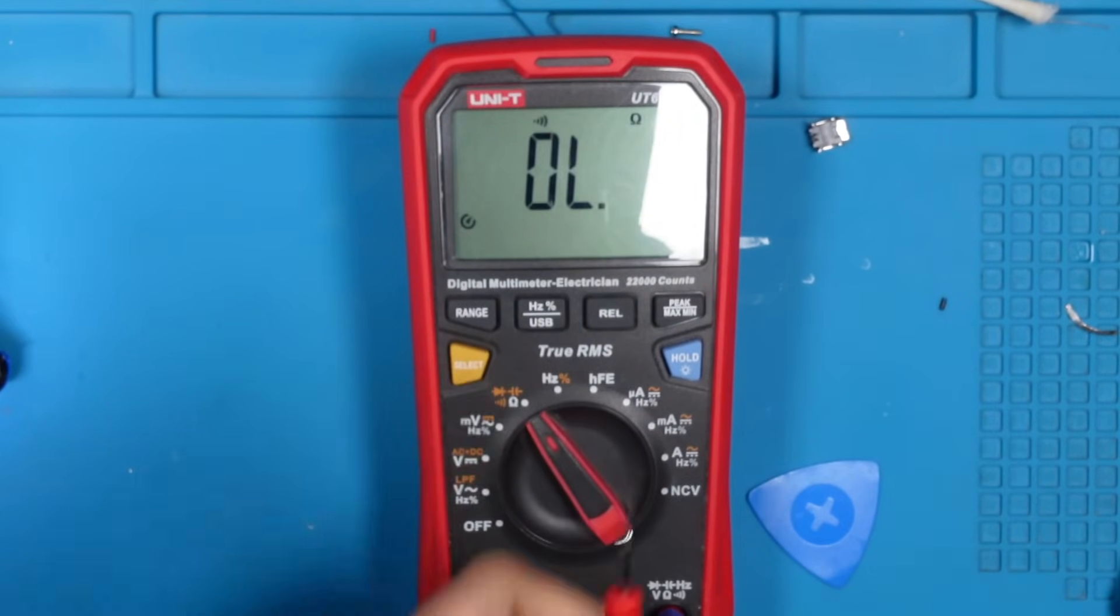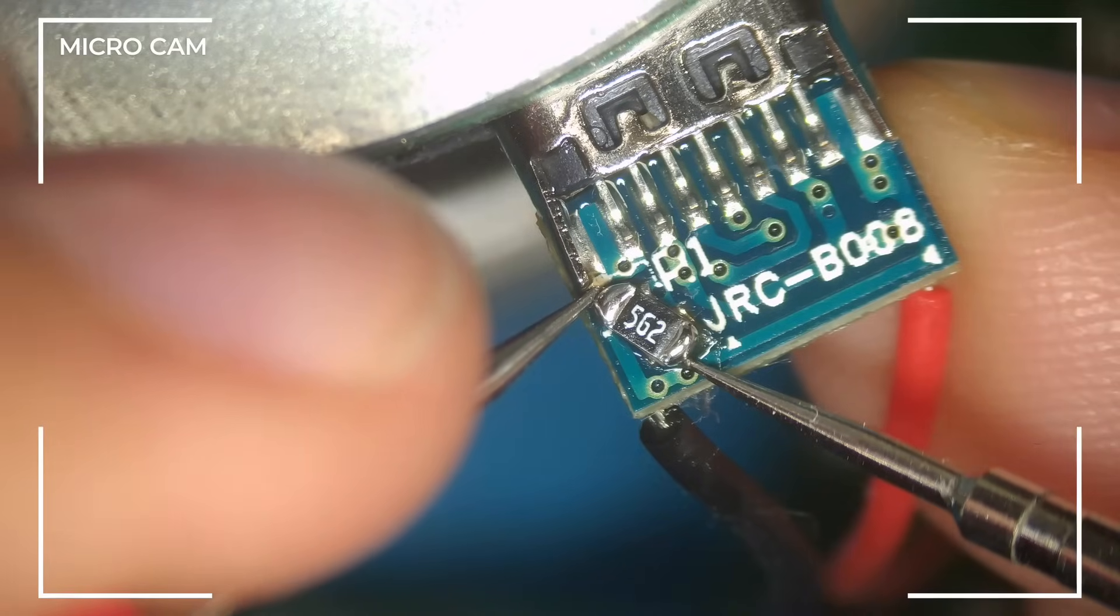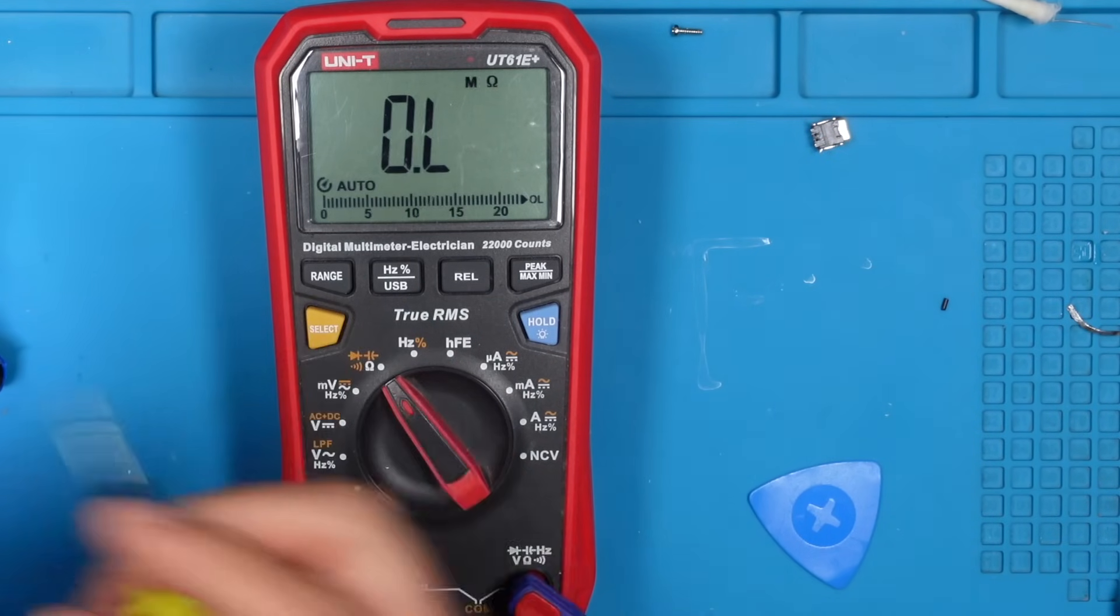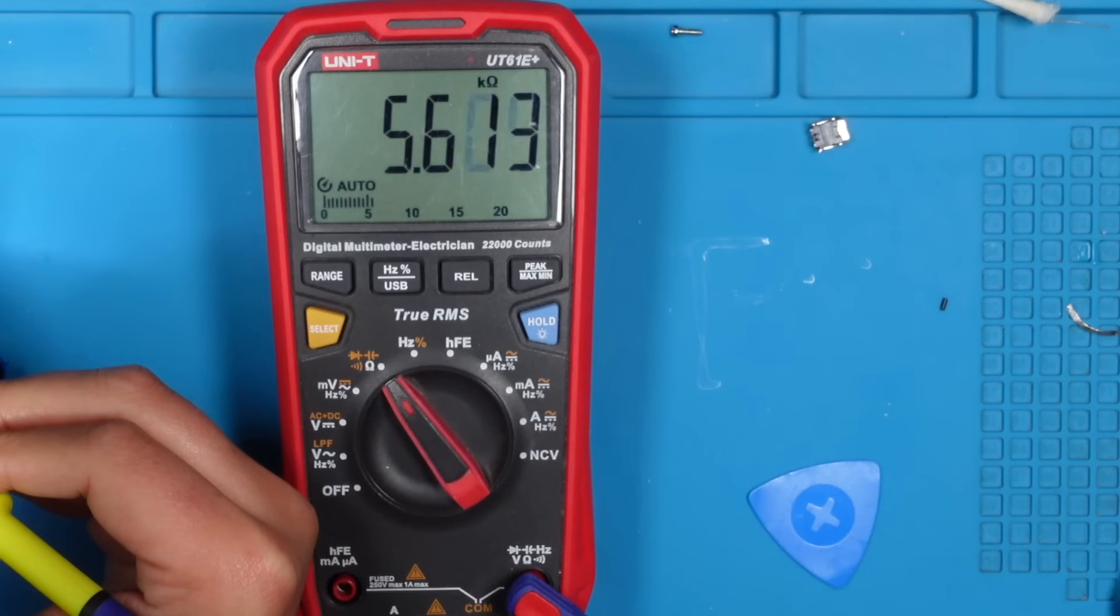Got the meter in continuity mode. Let's see if we goofed and shorted something under that resistor while soldering. We are good. No shorts. Now let's switch to ohms mode and give that resistor a check. That looks good. Nice.